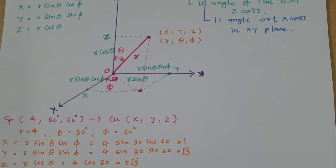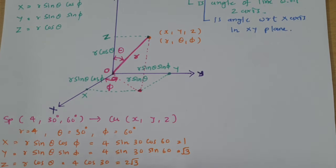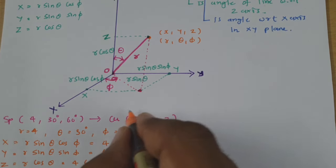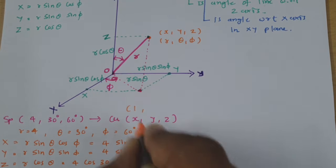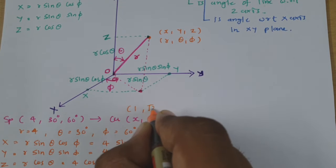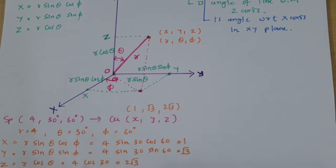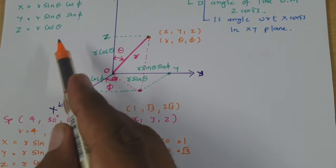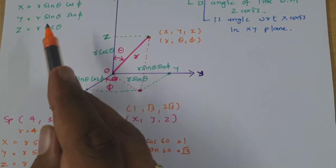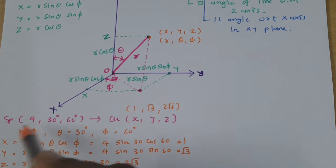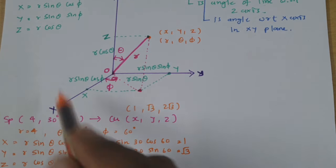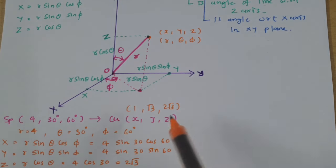So the Cartesian coordinates for X, Y, Z are 1, root 3, and 2 root 3. This is how we can translate a point in terms of Spherical Coordinates into a point in terms of Cartesian Coordinates.